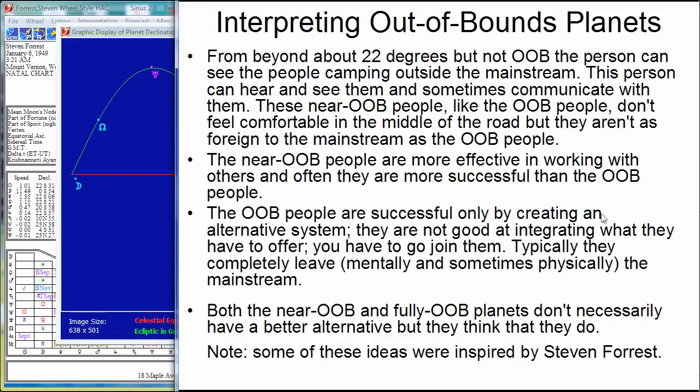So, the out of bounds people, by contrast, the out of bounds, not the near out of bounds, the fully out of bounds people are successful only by creating an alternative system. They are not good at integrating what they have to offer. You have to join them. You have to go and join them. Typically, they completely leave mentally. They're leaving, sometimes even physically, but mentally, they leave the mainstream. They create their own way. They're not as good at integrating and being successful.